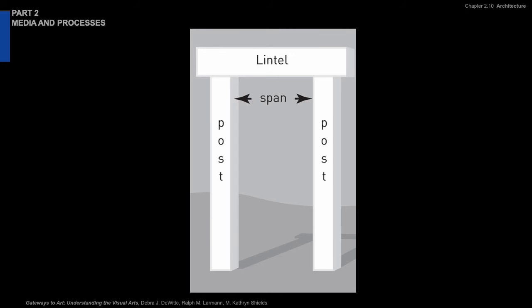The post and lintel system works really well, but there are some issues. The span of the lintel is limited by the material — you can't have a very long span of stone without cracking or collapsing, as gravity pushes down in the middle of the lintel. The longer the span, the more likely it will collapse. Post and lintel construction is also limited in height and width by the size of the lintel and the number of uprights, which determine the size of the entire architectural space.